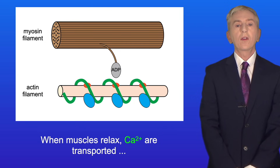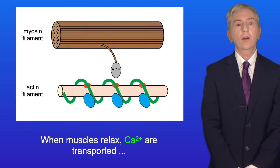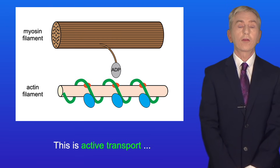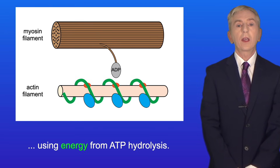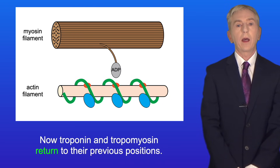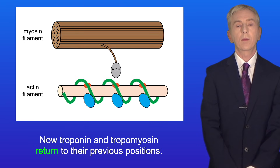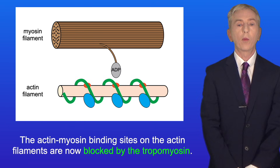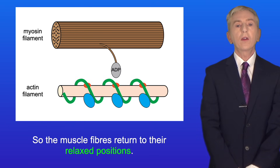When muscles relax, calcium ions are transported from the sarcoplasm back into the sarcoplasmic reticulum — this is active transport using energy from ATP hydrolysis. Troponin and tropomyosin then return to their previous positions, blocking the actin-myosin binding sites on the actin filaments. So the muscle fibers return to their relaxed positions.